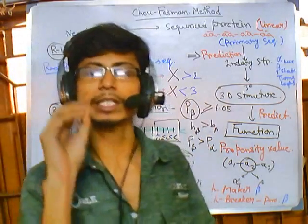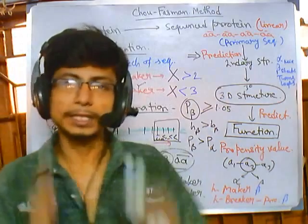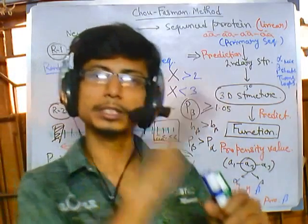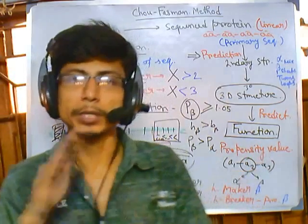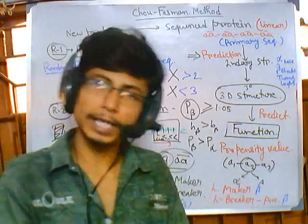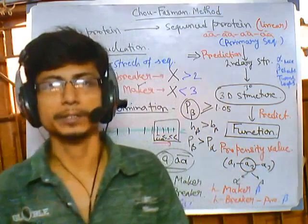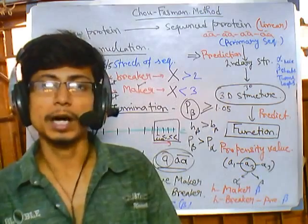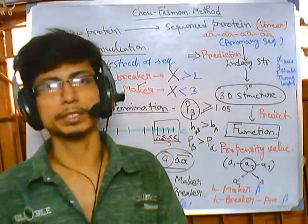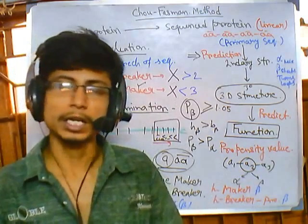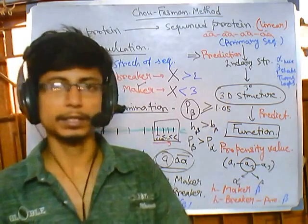The sites will tell you which method they are using to analyze your primary sequence and give you the secondary structure result. We will be solving this in our practical sessions. The most important thing to remember is this propensity value — it tells you whether the amino acid you are choosing is going to be in alpha helix or beta sheet. How we get these propensity values will be covered in the next video.